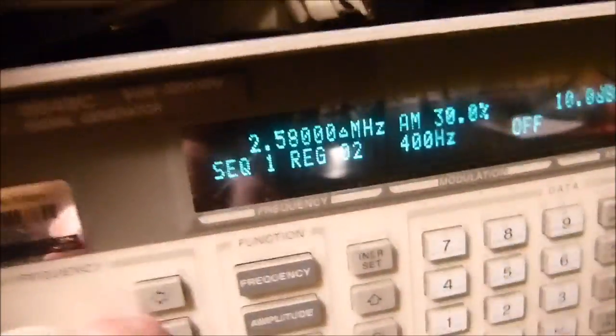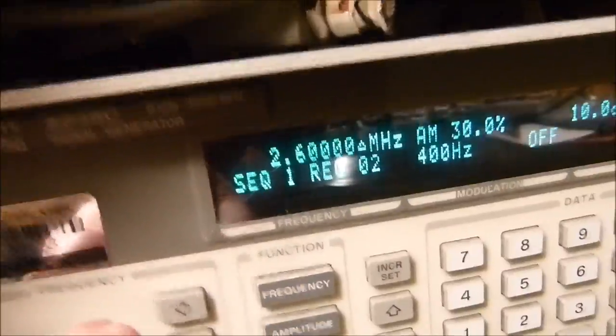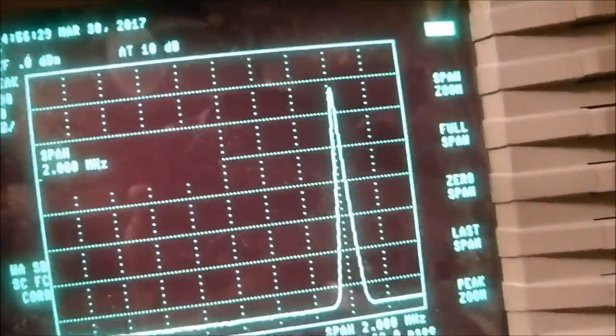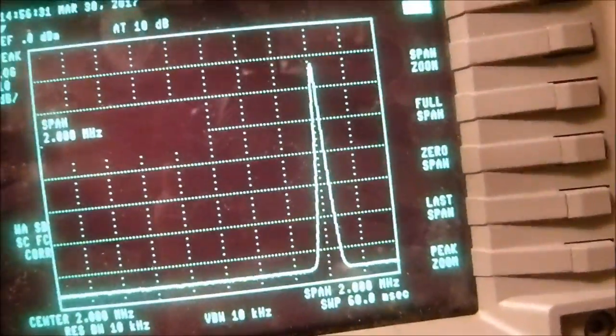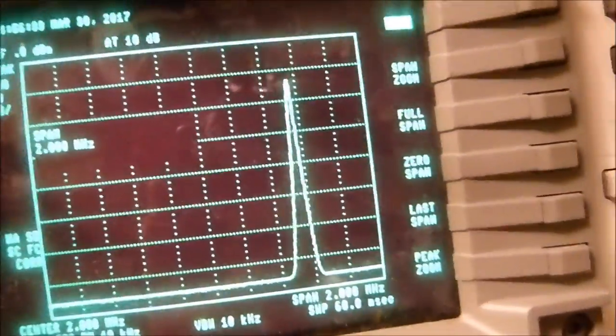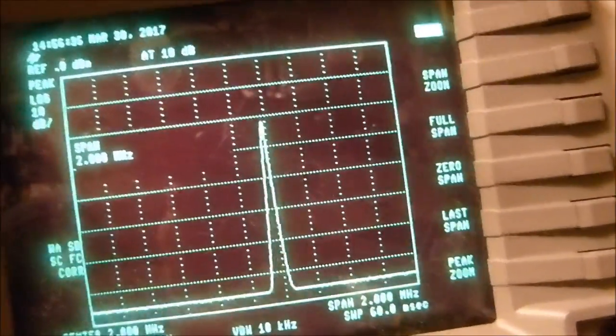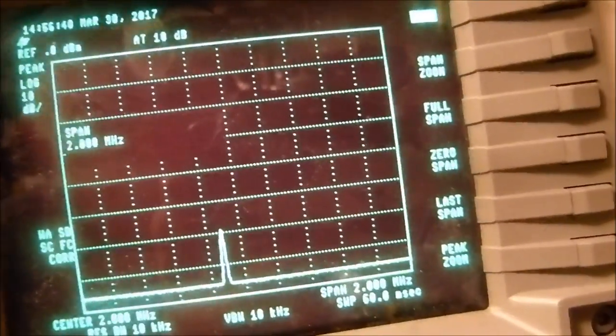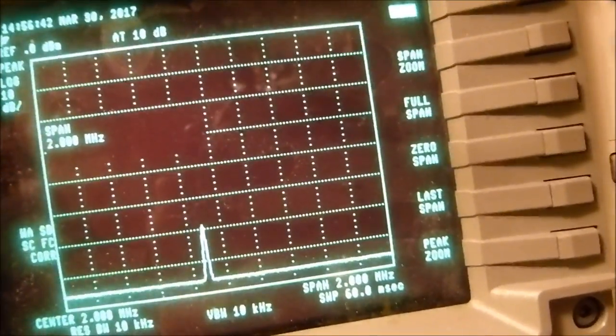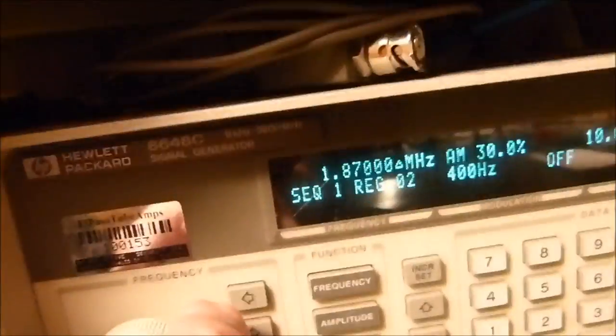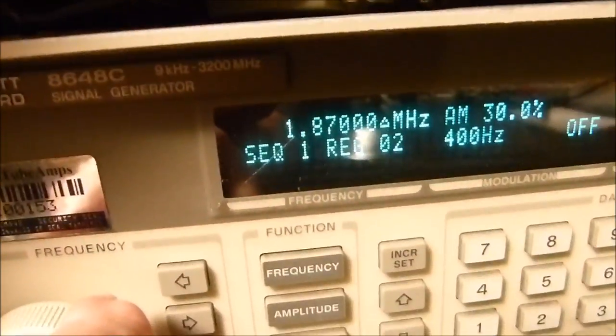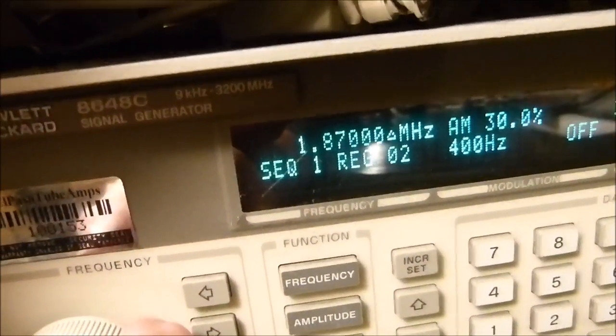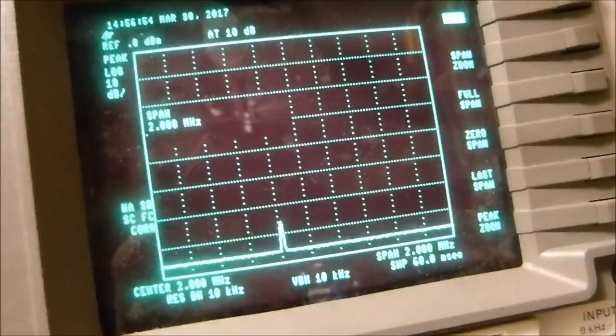But as we go up in frequency, we got basically no attenuation right about there, which is 2.58 megahertz, 2.6 right there. So it's not attenuating anything above 2.6 megahertz. As we go down in frequency, the attenuation starts dropping off considerably. See, it's down—wow—it's down 10, 20, 30, 40, it's down 50 dB right there at 1.87 megahertz. That's just right above the AM broadcast band.